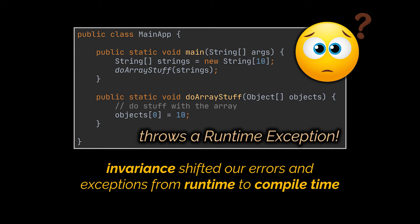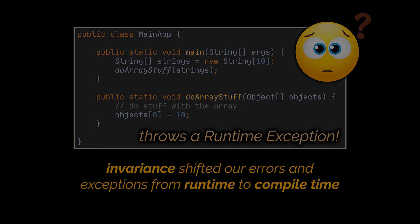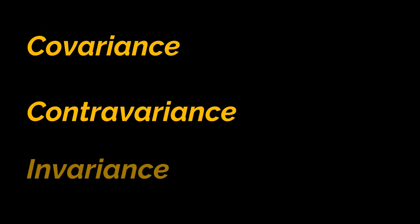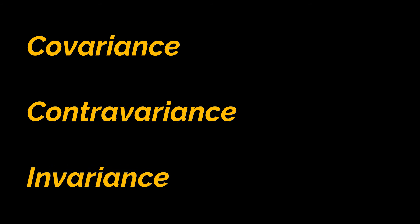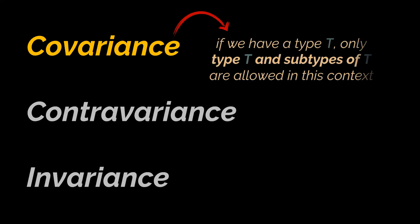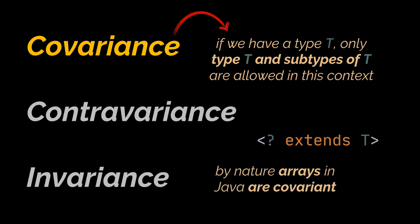There are three main terms you should be aware of: covariance, contravariance, and invariance. Covariance means that if we have a type T, only type T and subtypes of T are allowed in this context. In Java, this is represented by the upper bounded wildcard, and by nature, arrays in Java are covariant — hence why we were able to pass an array of strings to our first method.